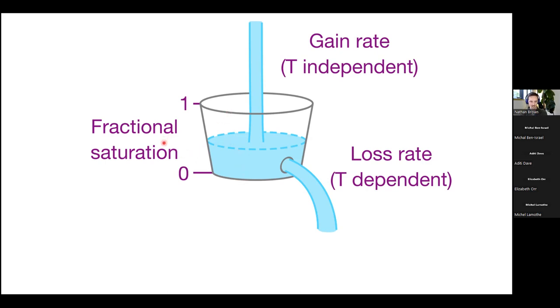So depending on the balance between these two, you will be somewhere between totally empty and totally full. So we'll call this the fractional saturation. If it's zero, the traps are totally empty. One is totally full, it's saturated. So the loss rate goes like this, where temperature sits over here.